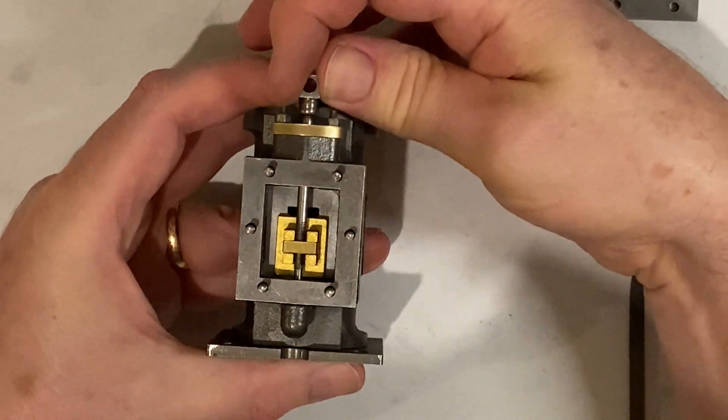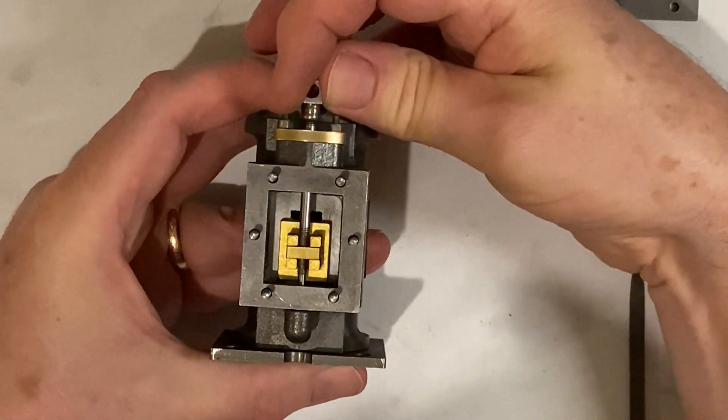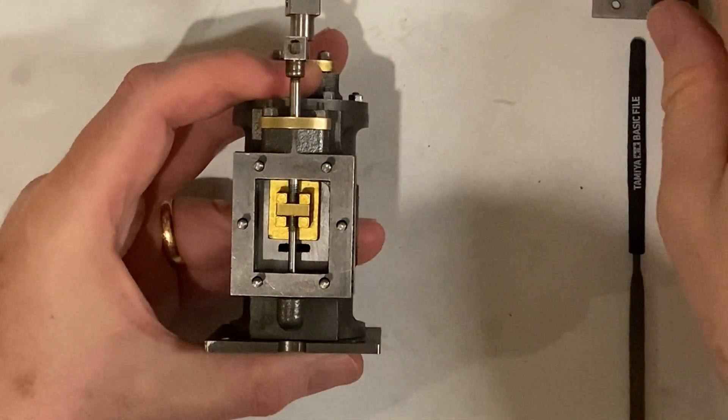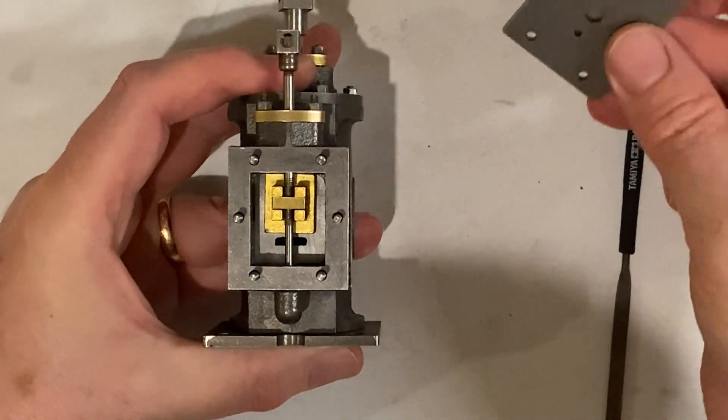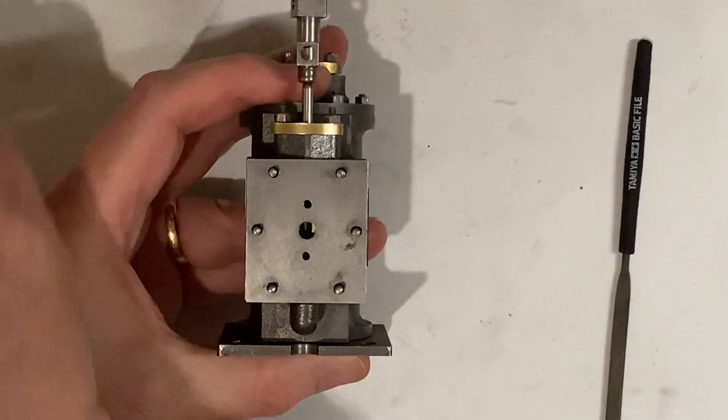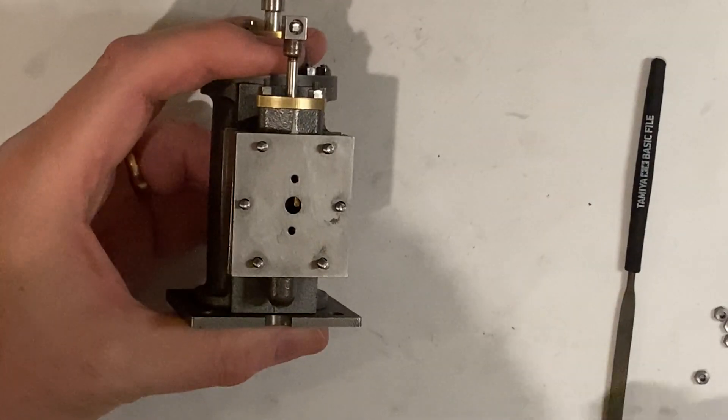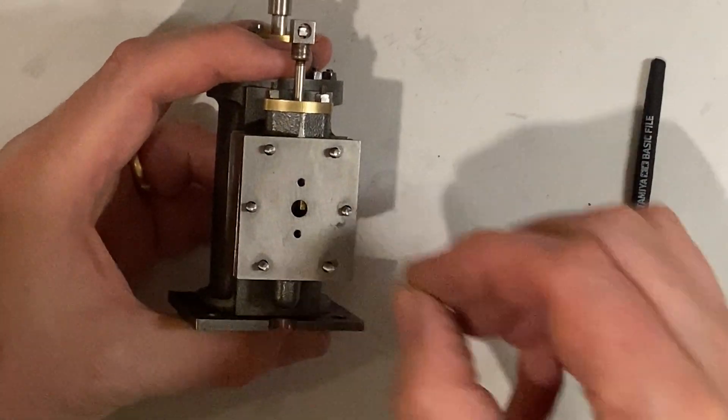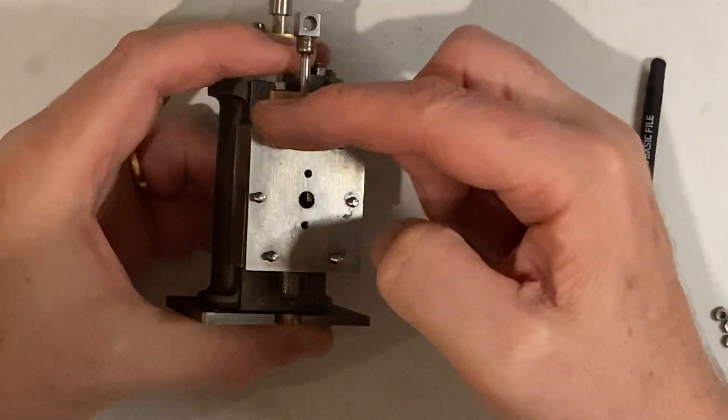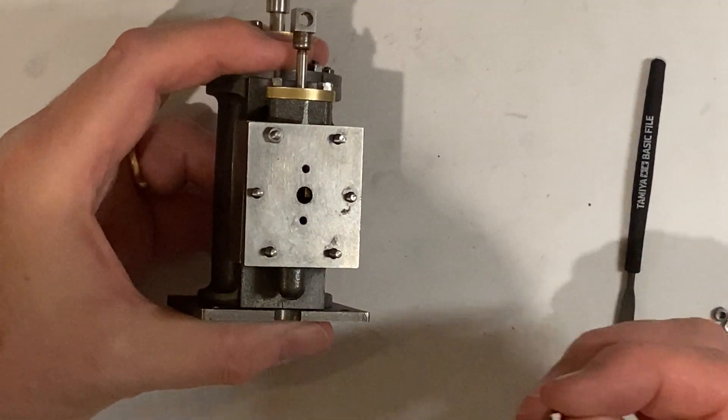And we can see the valve is moving up and down nice and freely now. It'll get even freer when I put a little bit of oil on it. Now the valve cover goes on like this. There is supposed to be a gasket underneath this but I'm leaving this out for now and this is just fixed on temporarily with some 7BA nuts.